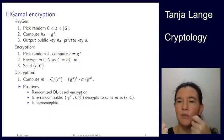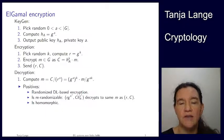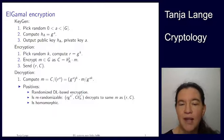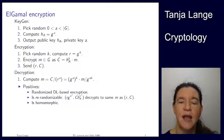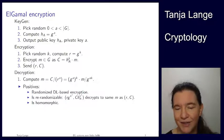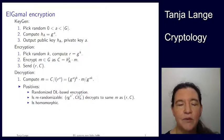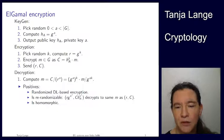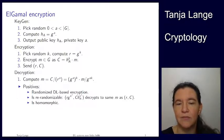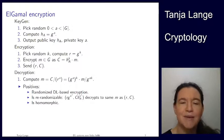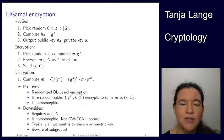ElGamal is also rerandomizable if you ever need this. If you see a ciphertext and want to pass it on without revealing it's the old ciphertext, you can pick some K-prime, multiply by G to the K-prime in the first component and Alice's public key to the K-prime in the second component — and that decrypts to the same message as the original. By the same property you can also see that this is a homomorphic system: if you want the encryption of m1 times m2 given two ciphertexts, you can multiply them componentwise.